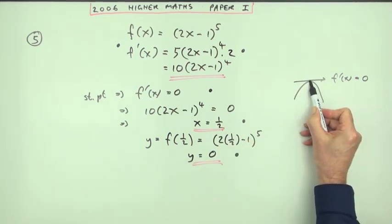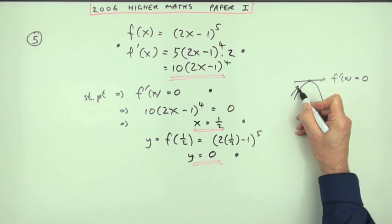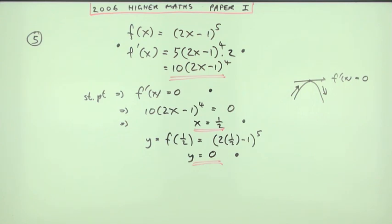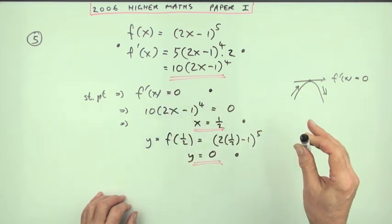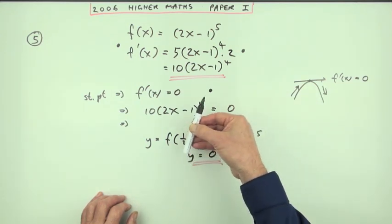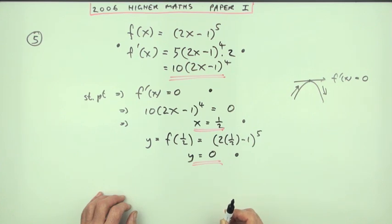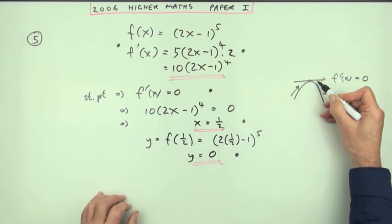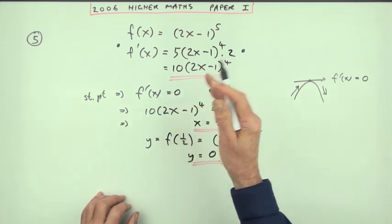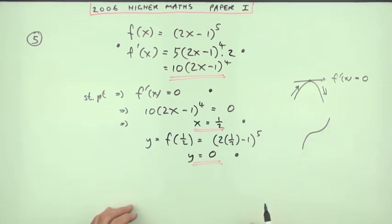The stationary point is (1/2, 0). To find what type it is, I need to examine the gradient before and after it using a nature table. Sometimes you can use the second derivative to determine the nature of a stationary point — that's differentiating one more time. If the gradients are slowing down, that's a negative rate of change indicating a maximum. However, if the second derivative is zero, it indicates a point of inflection but won't tell you what type — so you still need to check gradients before and after.